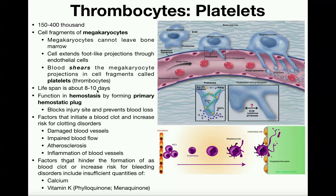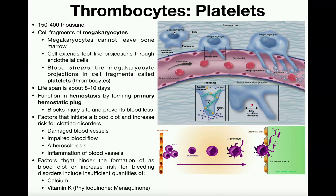Platelets are going to be generated ultimately from cells that are very large called megakaryocytes. We actually see a megakaryocyte right here — relatively speaking it's a very, very large cell. Now, the megakaryocyte I want you to imagine like a dinner plate — it's a really big circular cell, and this megakaryocyte cannot leave the bone marrow.